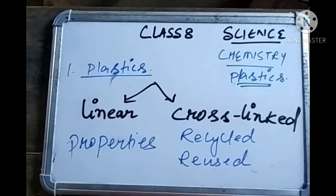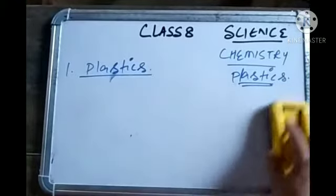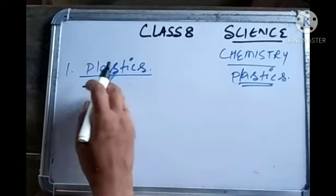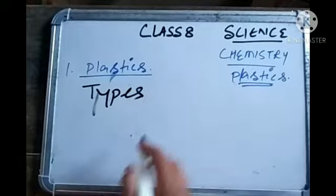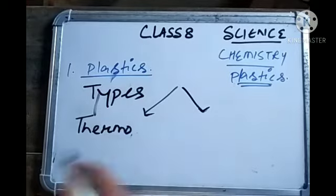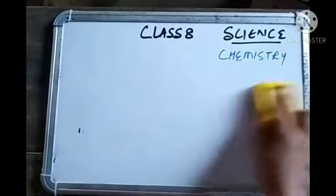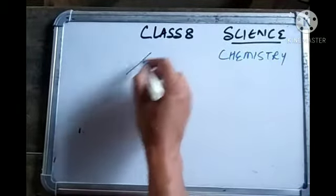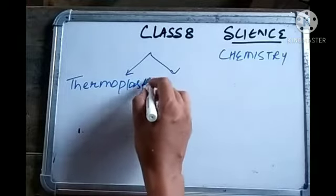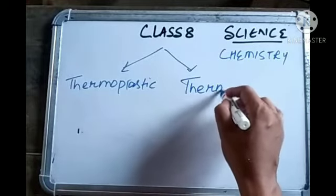Within the topic of plastics, the next point is the types of plastic. How many types are there? When you look at your textbook, you will find two types of plastic: one is thermoplastic and the other one is thermosetting plastic.